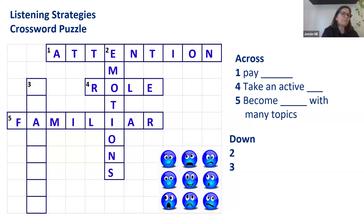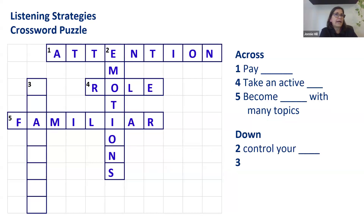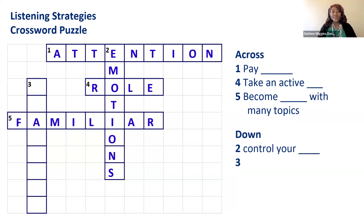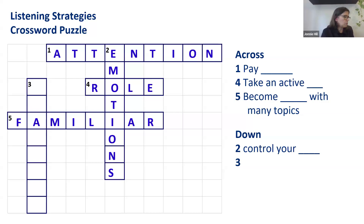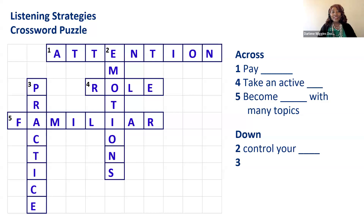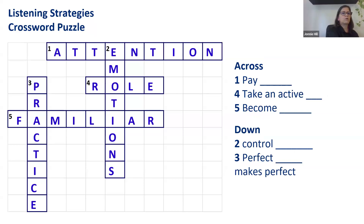The last clue: 'blank makes perfect' — but I'll revise it to 'perfect blank makes perfect.' Just like athletes need to train in order to play a better game, listeners also need to train and do exercises to listen better. The answer is practice. So these are five different strategies we can use for helping students improve their listening comprehension and monitor their attention: pay attention, take an active role, become familiar with many topics, control your emotions, and practice.